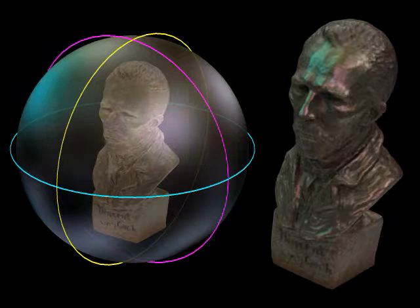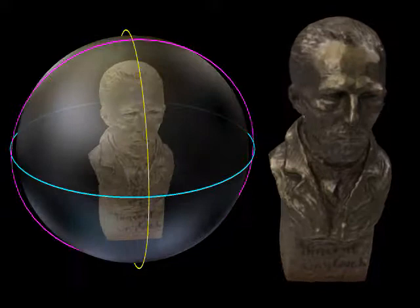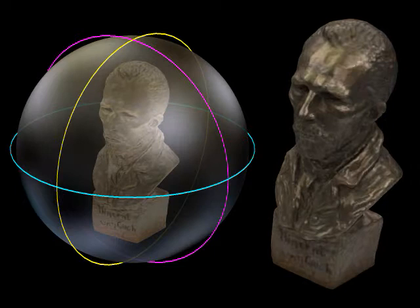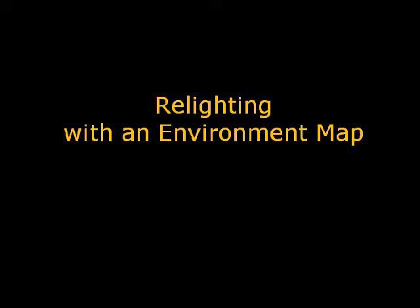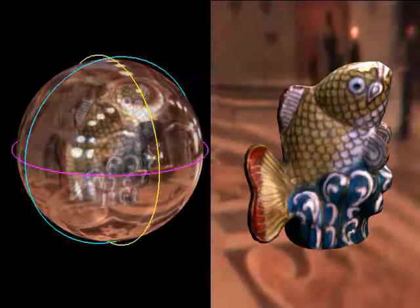Lighting can also be edited — from purple to cyan, or we can even remove one light. If we do not like the original illumination, we can replace it with a new environment map.